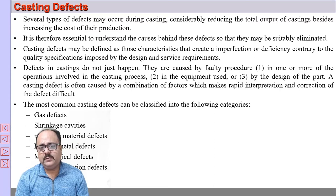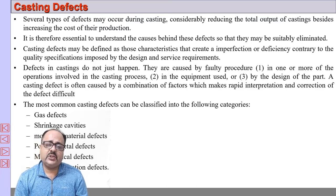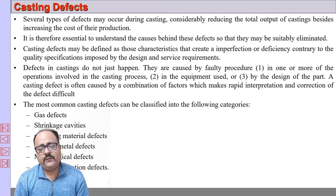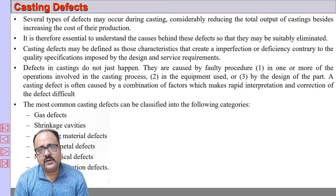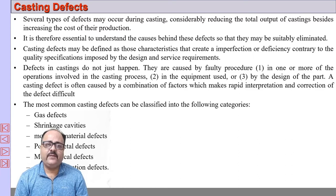Defects can also result from faulty molding practices, faulty metal pouring practices, improper pouring temperature, and the ingredients used in casting. There are various factors associated with casting defects. Let us study some of them — we will go into as many different types of defects as possible, understanding their causes and how they can be rectified.